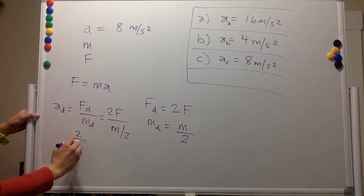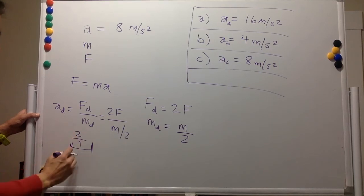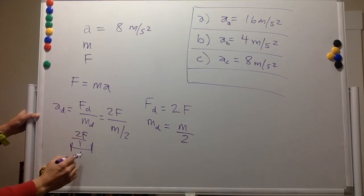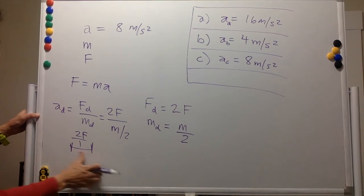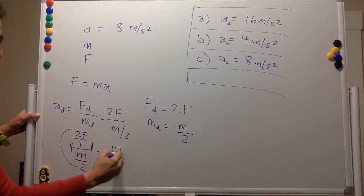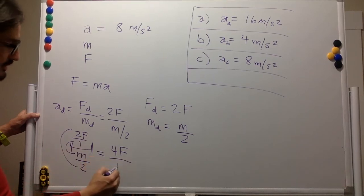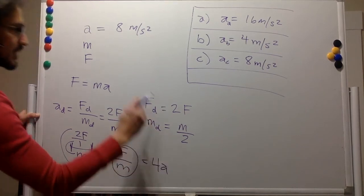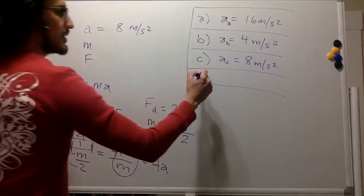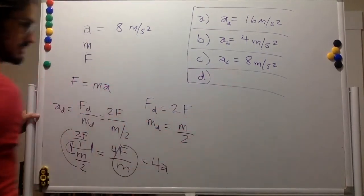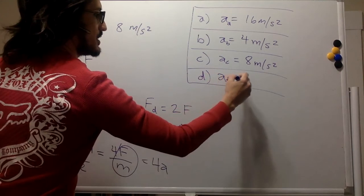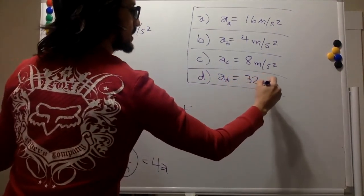That gives us 2F divided by M over 2, which is the same as 2F times 2 over M, giving 4F over M. Since F divided by M is the original acceleration, you have 4 times the original acceleration. So if the original is 8 meters per second squared, here it's going to be 32 meters per second squared.